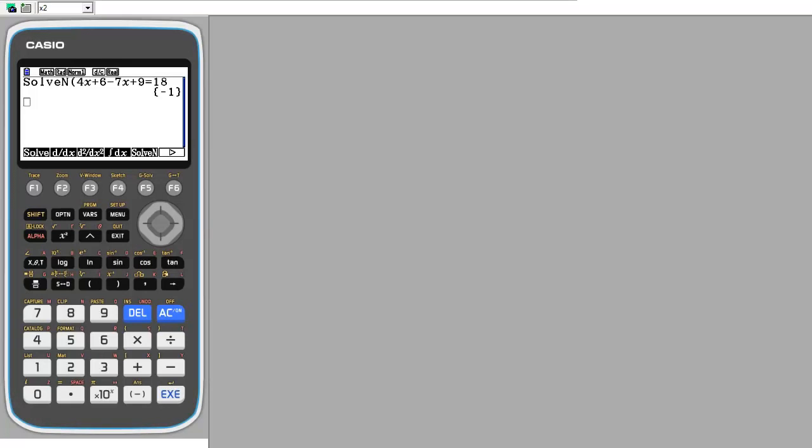From here you can enter the next problem. If you enter your next problem from here, make sure to press the F5 button for Solve In. You need this Solve In here. But if you want to delete this problem, press the Shift button, then the Quick button. Then press the F2 button. To delete all, press the F2 button again. Then this message pops up. Delete all, yes, press the F1 button.